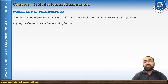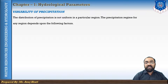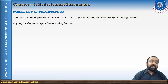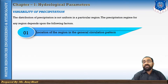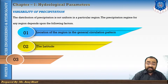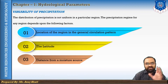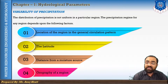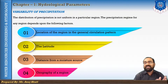The distribution of precipitation is not uniform in a particular region. Precipitation may vary from region to region — you cannot say the same distribution exists in each and every region. The precipitation for any region depends on a few factors: the location of that region in the general circulation pattern, the latitude of that region, the distance from a moisture source, and the orography of that region. These four are the major factors affecting the distribution of precipitation.